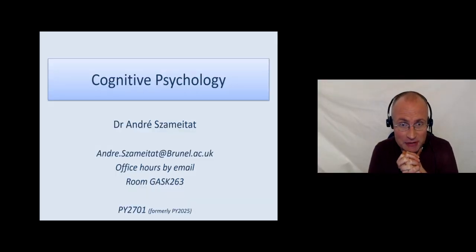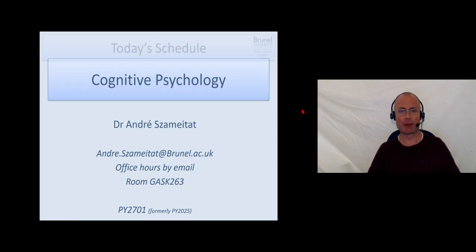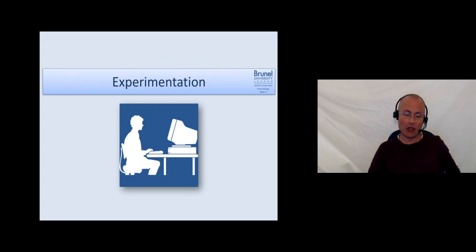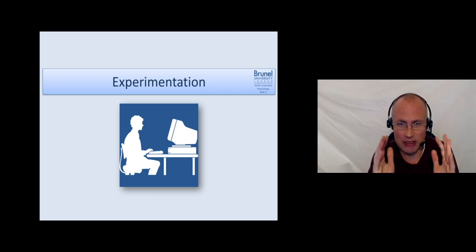Welcome everybody to the third part of the first week's lecture materials. We are now talking about experimentation. In cognitive psychology, we naturally look at data like in most fields of psychology. It's an empirical thing, and the way we collect data is mostly by experimentation.